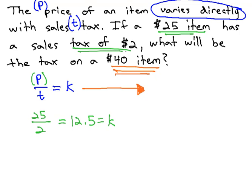The $40 given to us, we know is the total price of the item, so we'll replace the P with 40 over the tax, which is what we're looking for, equals our constant of variation, or 12.5.